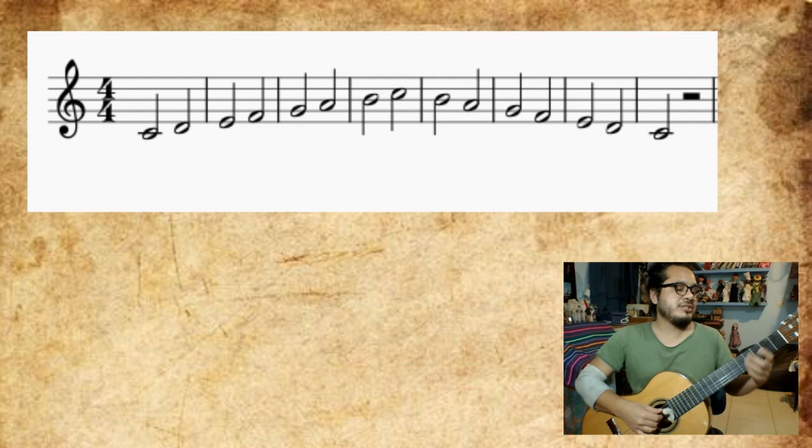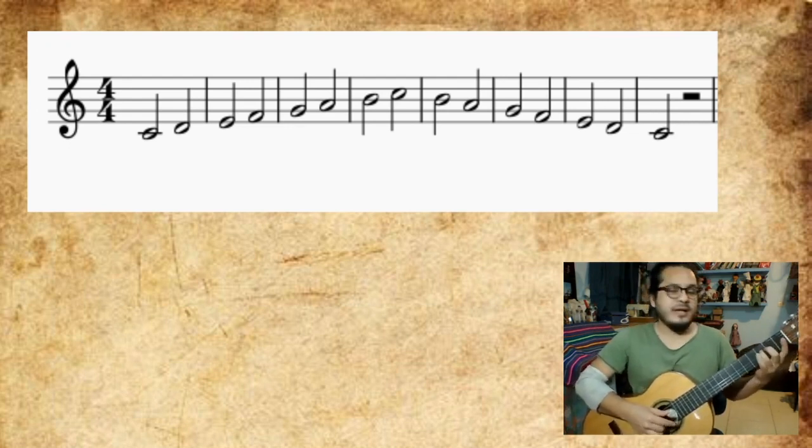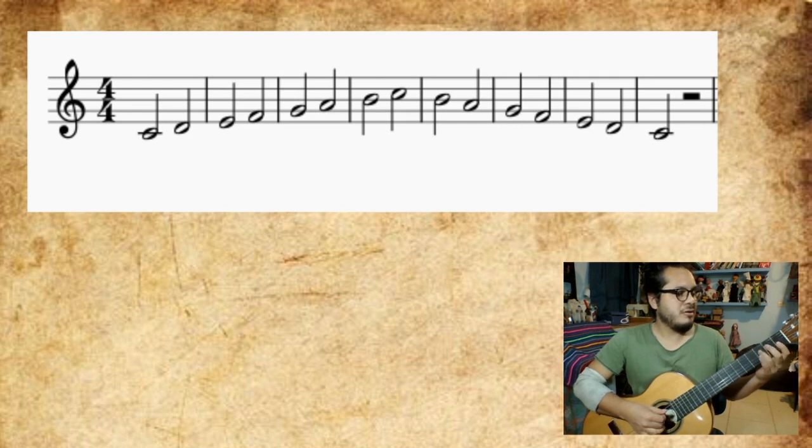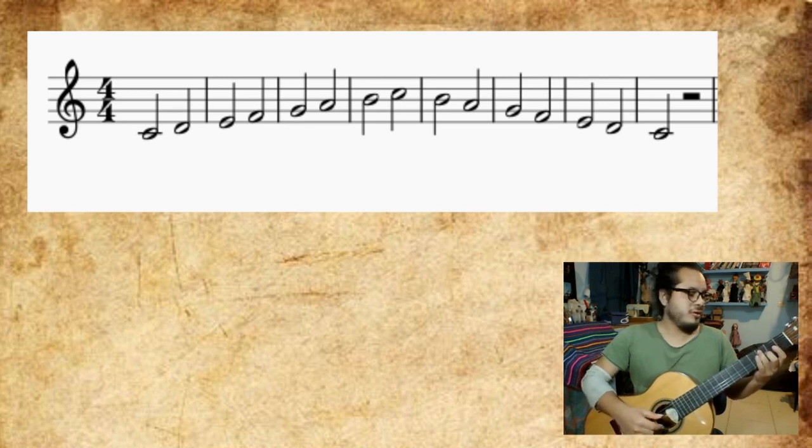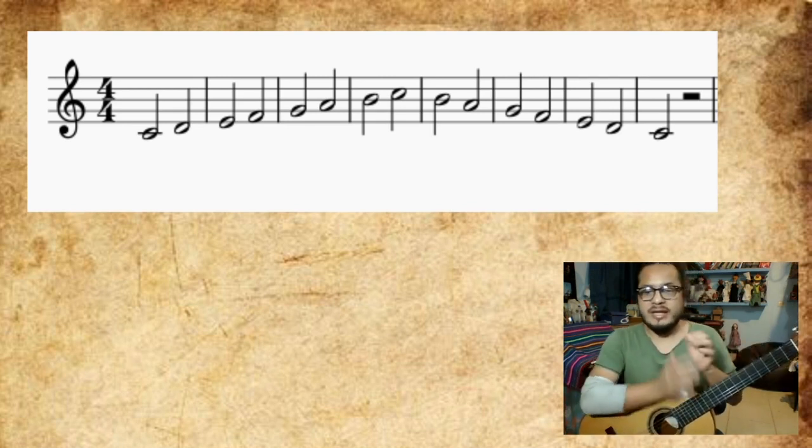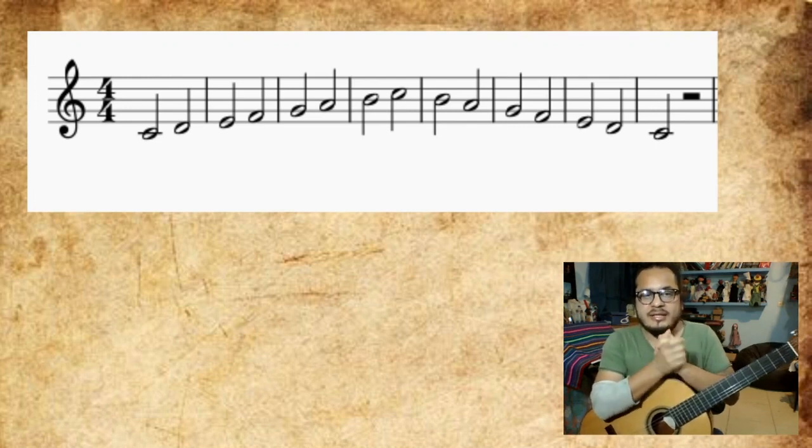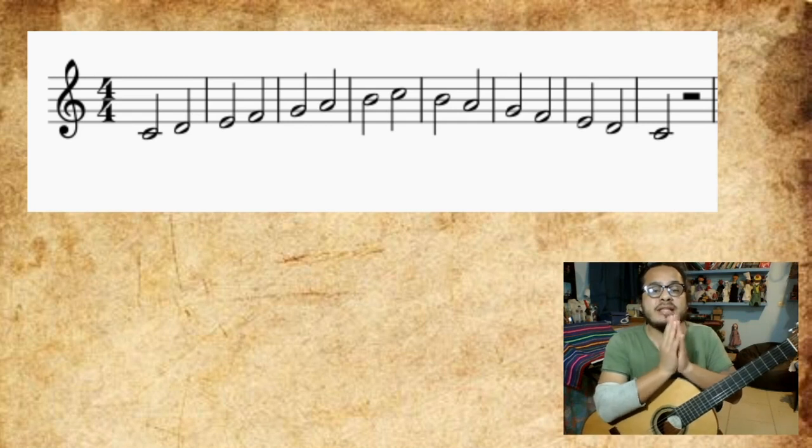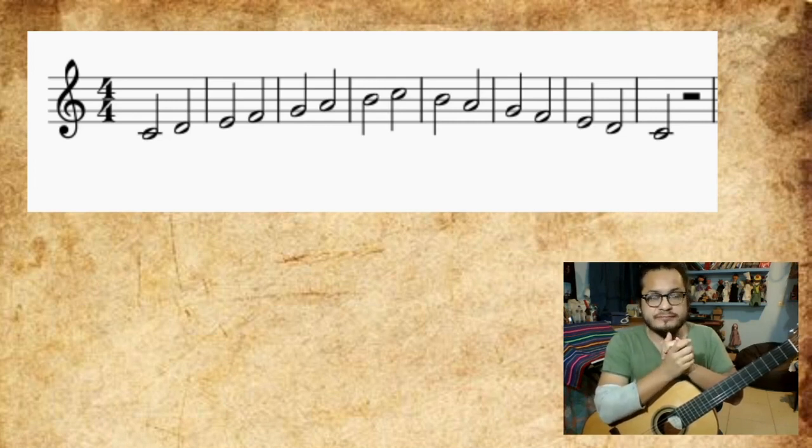Así, tenemos la escala de Do mayor en la primera posición. Dato importante. Esta escala tiene que ser decorada. A mejor decorada es mejor porque así a gente va a saber donde que están ubicadas esas notas. Cuando a gente olhe para una partitura, va a saber donde que va a ficar esas notas.